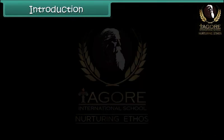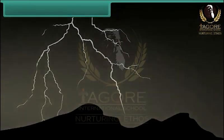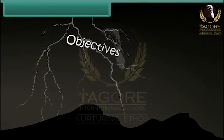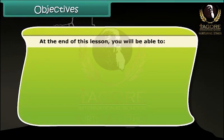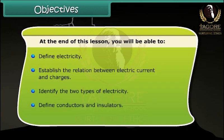Objectives: At the end of this lesson you will be able to define electricity, establish the relation between electric current and charges, identify the two types of electricity, and define conductors and insulators.